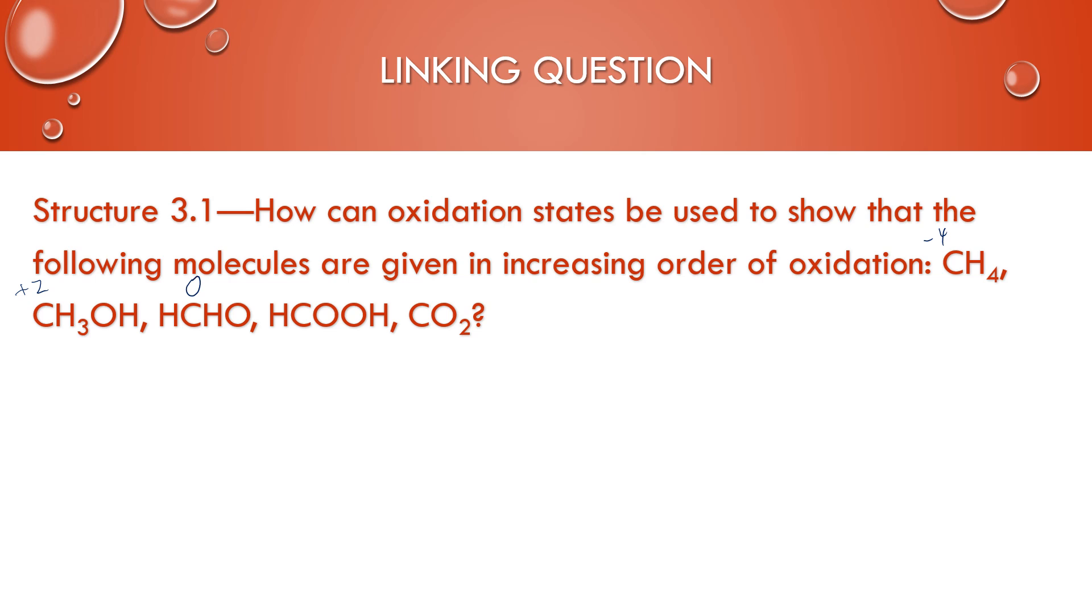In the carboxylic acid, that carbon is going to be a plus 2 oxidation state. In carbon dioxide, it's a plus 4 oxidation state. So because the hydrogens and oxygens aren't changing in any of them, you can just focus on the carbons and list them in order from the most negative oxidation state to the most positive oxidation state.